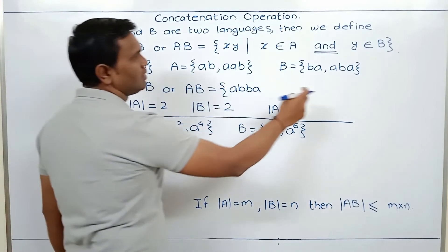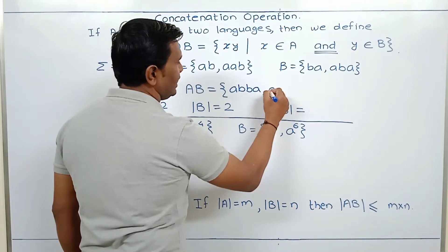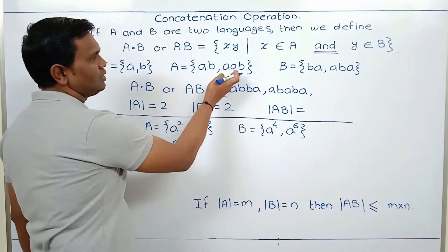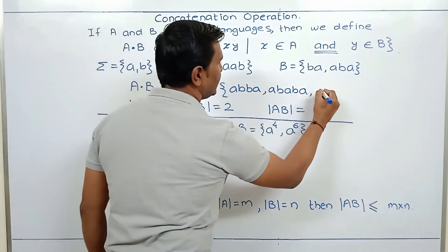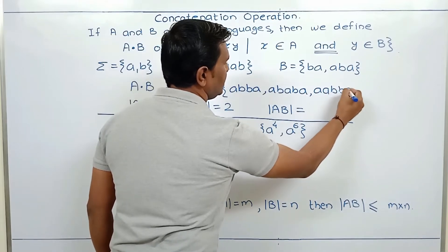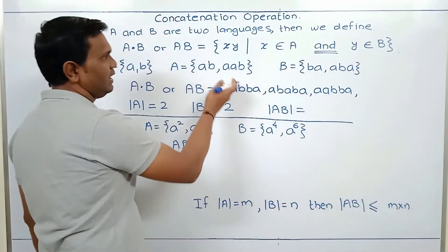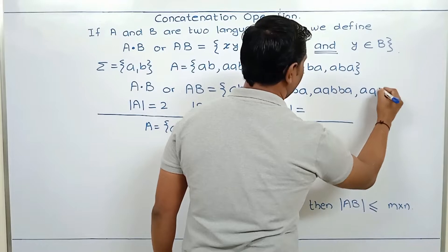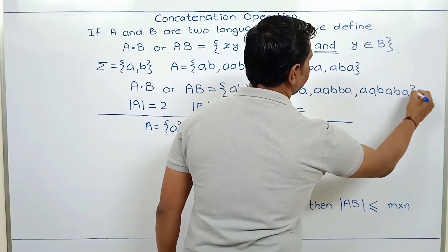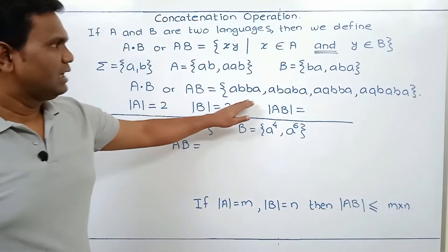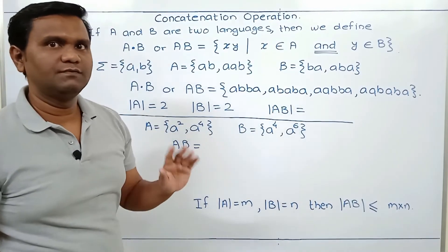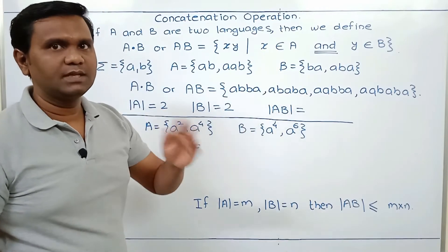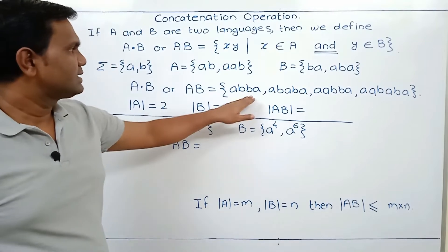For X = AB, Y = ABBA, we get AB concatenated with ABBA. We have calculated the strings and we should confirm there is no repetition. If there is repetition, we have to remove it. In this case, there is no repetition.